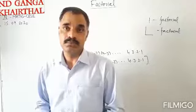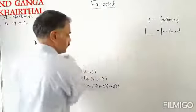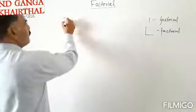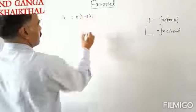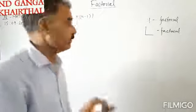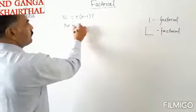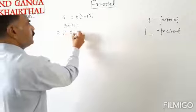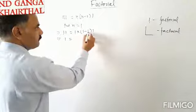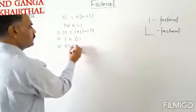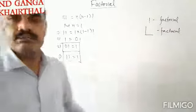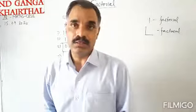Now we are finding 0 factorial. Zero factorial can be found using the formula: factorial n equals n into n minus 1 factorial. Put n equals to 1 on both sides. So 1 factorial equals 1 into 1 minus 1 factorial, meaning 1 equals 1 into 0 factorial. Therefore, 0 factorial is equal to 1. Both 0 factorial and 1 factorial have the same value.